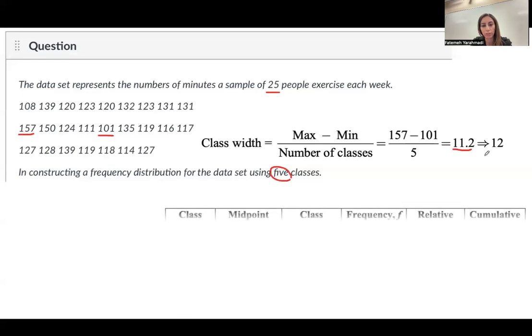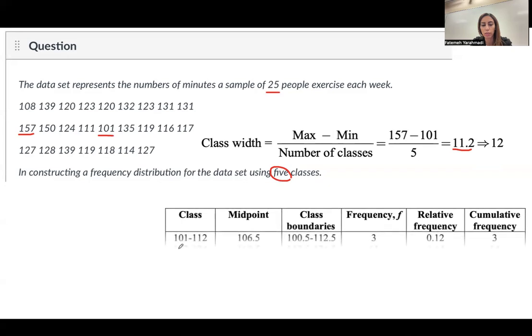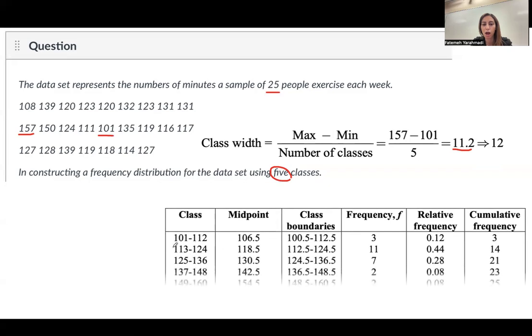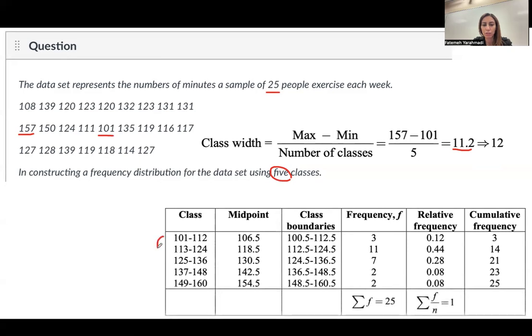Let's build our frequency table. The class starts from 101 and stops at 112 minutes. The next class starts at 113 minutes and stops at 124 minutes and so on. And note that the difference between these two is 12, which is the class width.